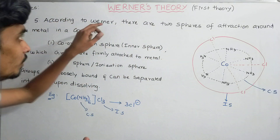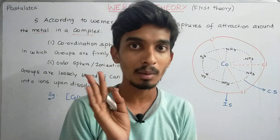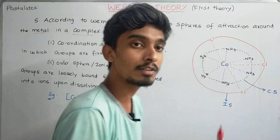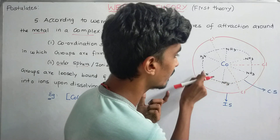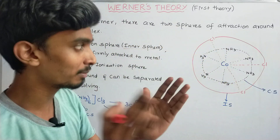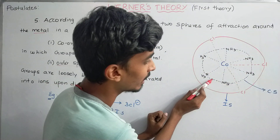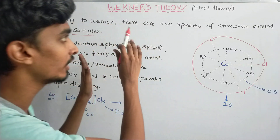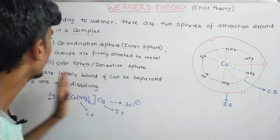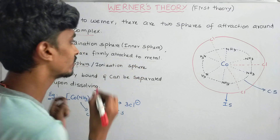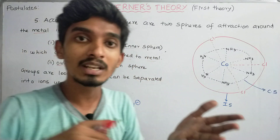According to Werner, there are two spheres of attraction around the metal in a complex. The first is the inner sphere and the second is the outer sphere. In a diagram, if you look at the dotted line in black, that represents the boundary. The inner sphere is shown in red and the outer sphere is outside. This inner sphere is called the coordination sphere.